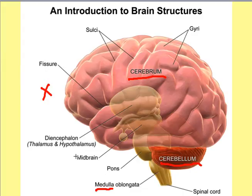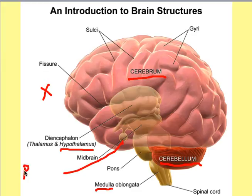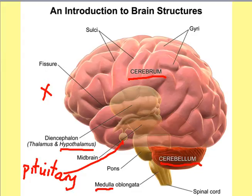There are two other structures to mention. This one here is called the hypothalamus, which is involved in the regulation of body water, temperature, and blood glucose. The other structure, which isn't labelled, is a gland called the pituitary gland. It's involved in releasing various hormones — in particular one called ADH that's involved in the regulation of water in your body.